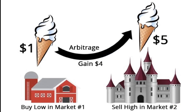Let's take an example. The ice cream in market 1 is at $1, whereas it's selling in market 2 at $5. So a person would buy it in market 1 and sell it in market 2. As a result, he'll have an arbitrage gain of $4. If a person bought 10 ice creams, his gain would be $40.